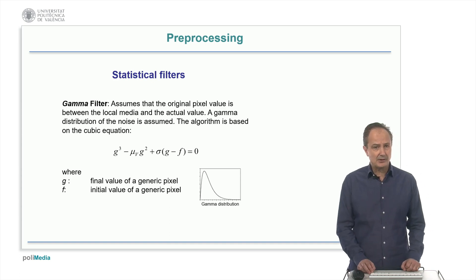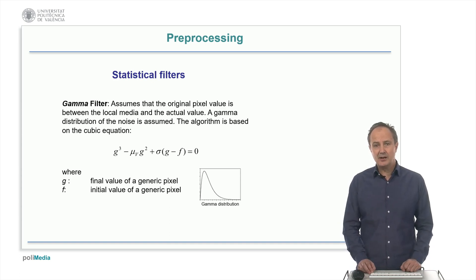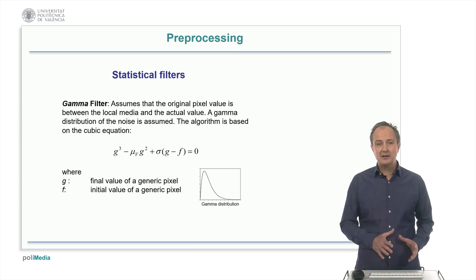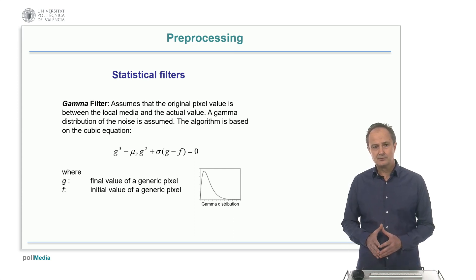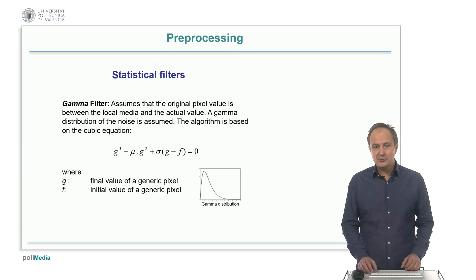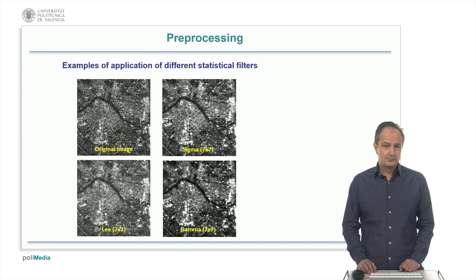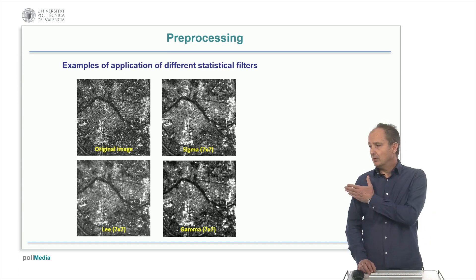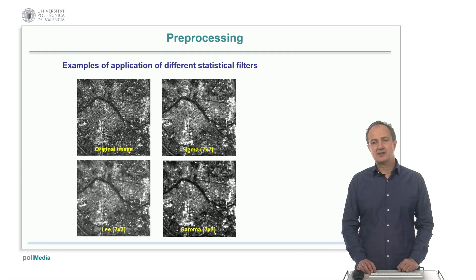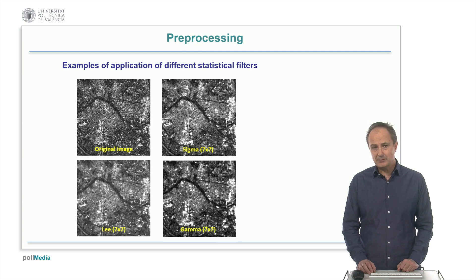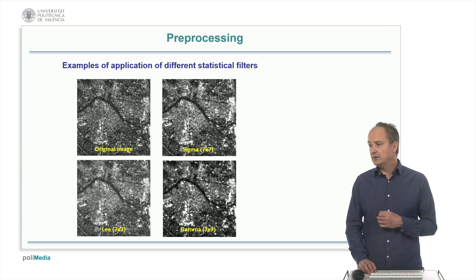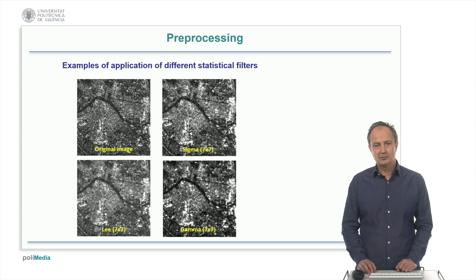The gamma filter assumes that the original pixel value is between the local mean and the actual value, and it assumes a gamma distribution of the noise, which in some cases is actually more realistic. This is an example of the effect of three statistical filters — sigma, Lee, and gamma — using neighborhoods of 7x7 over a satellite radar image. We can notice the smoothing effect with the different results.